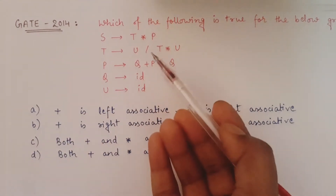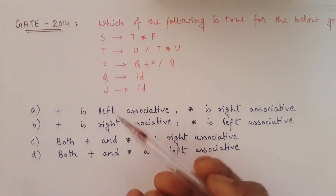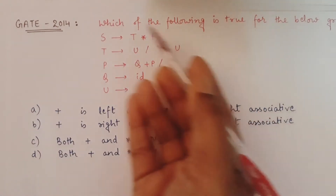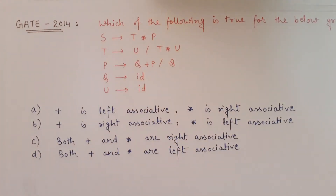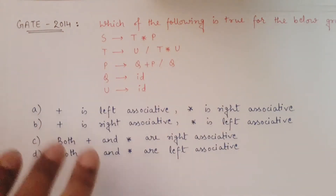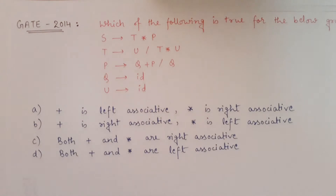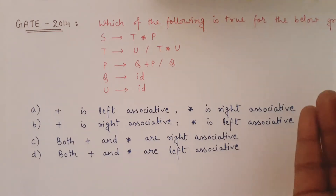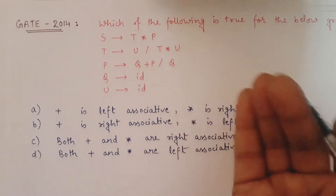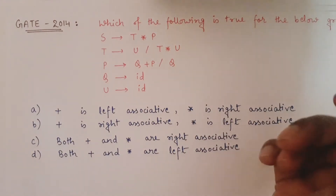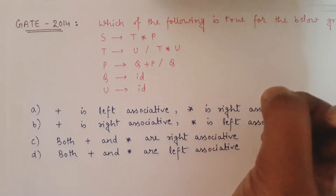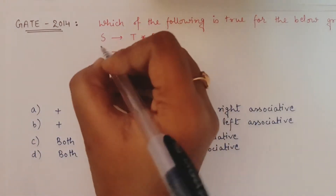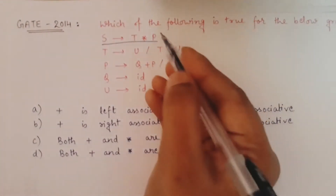So here, they have given the grammar and are asking us to find the associativity of star and plus. It is very simple. First of all, you have to find the productions in the grammar that involve plus and star. Since competitive exams have limited time, we will focus only on finding the associativity of plus and star. So we will figure out which particular productions in the whole grammar contain plus and star. The first one is: S gives T star P — star is there.